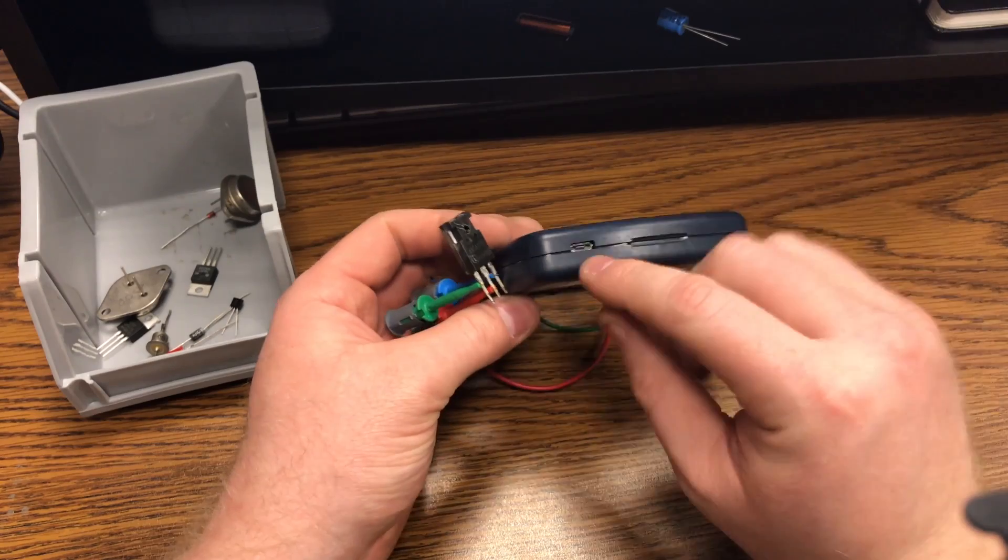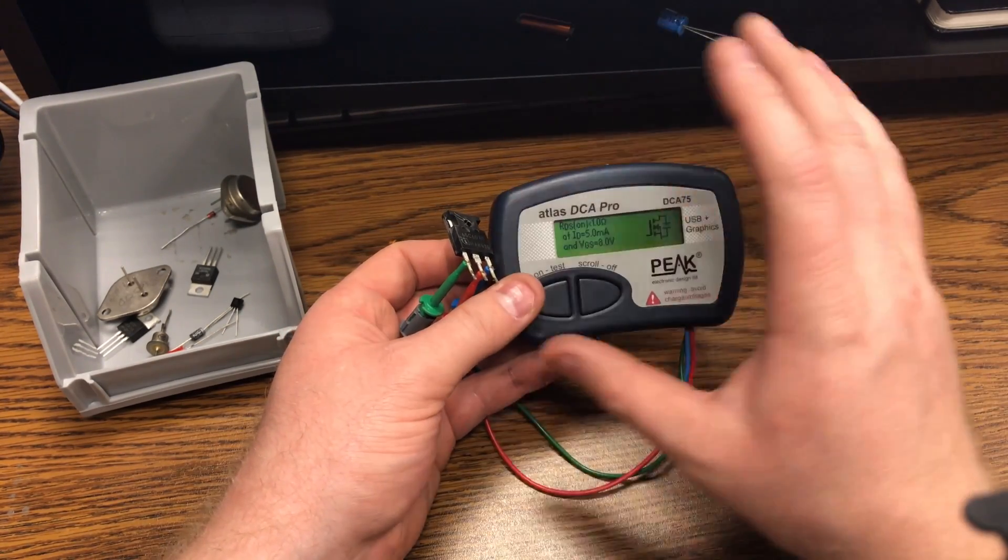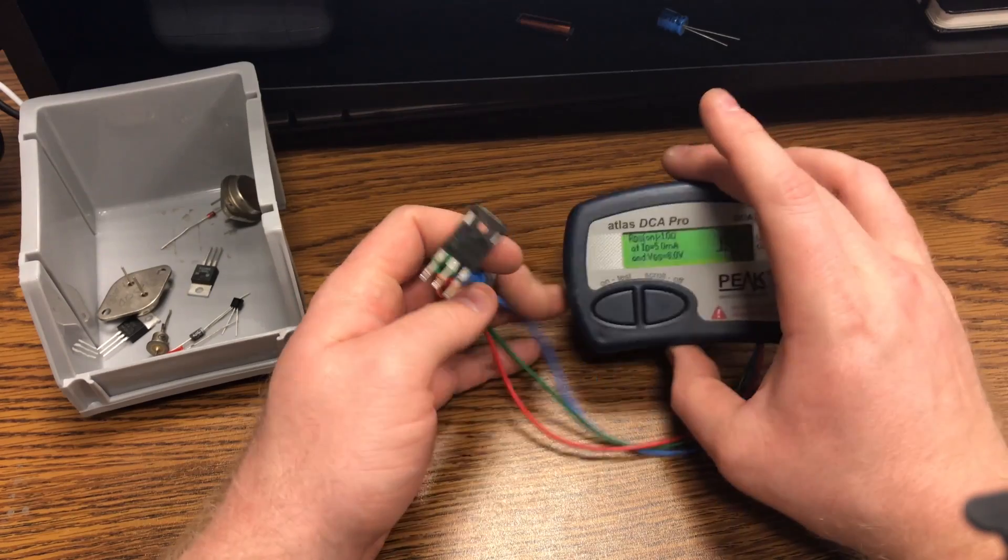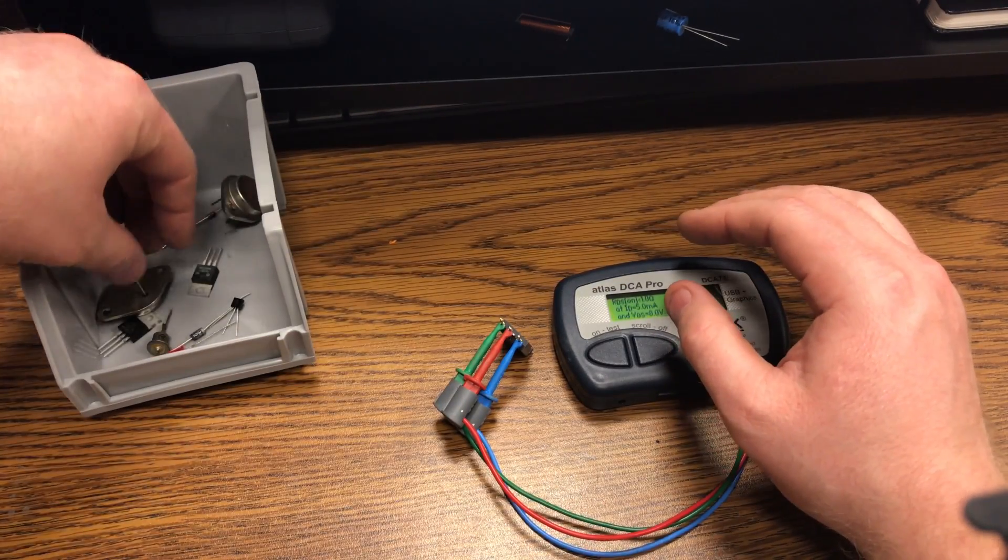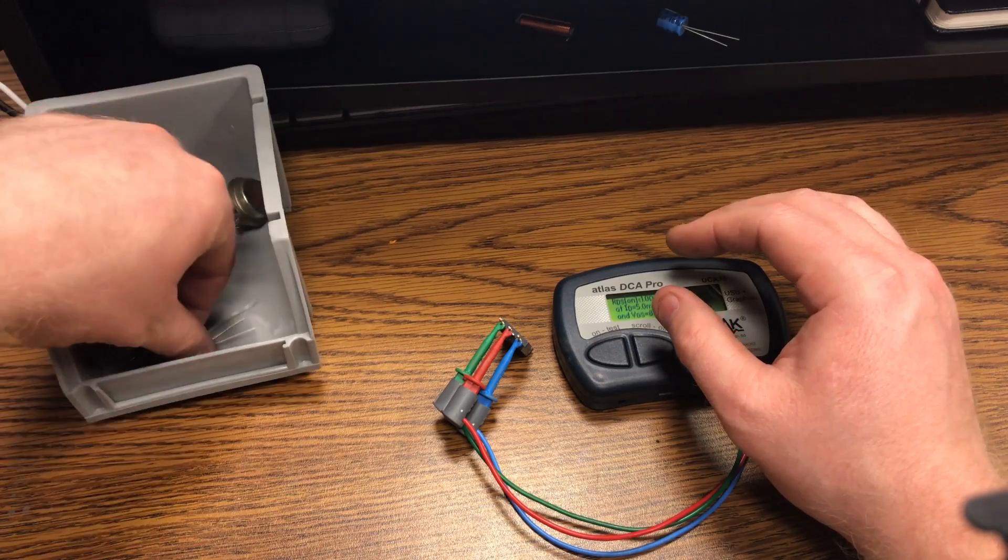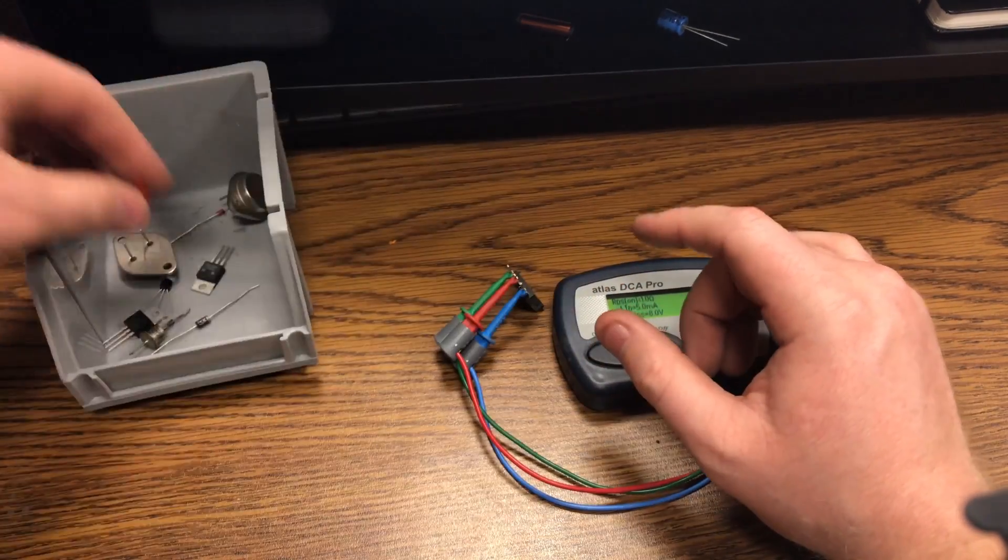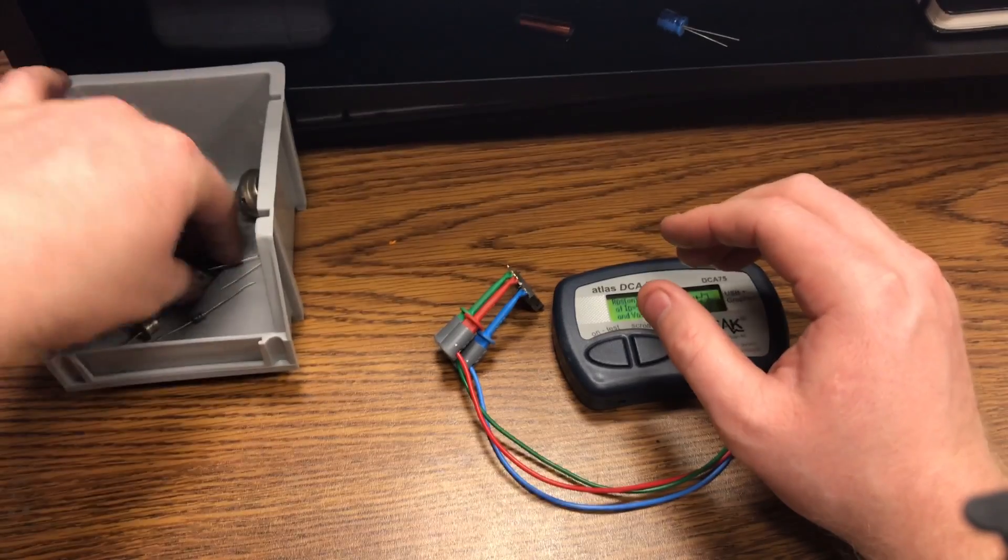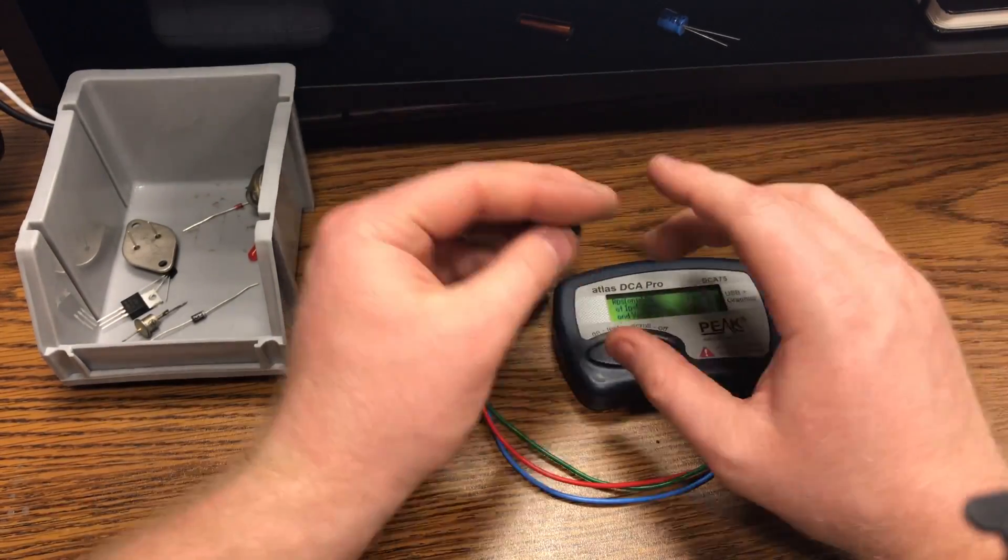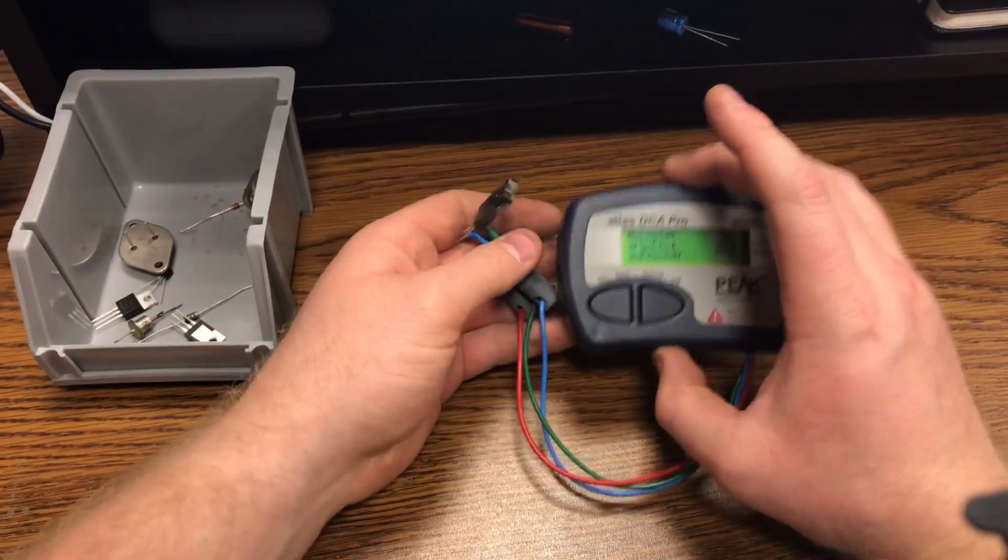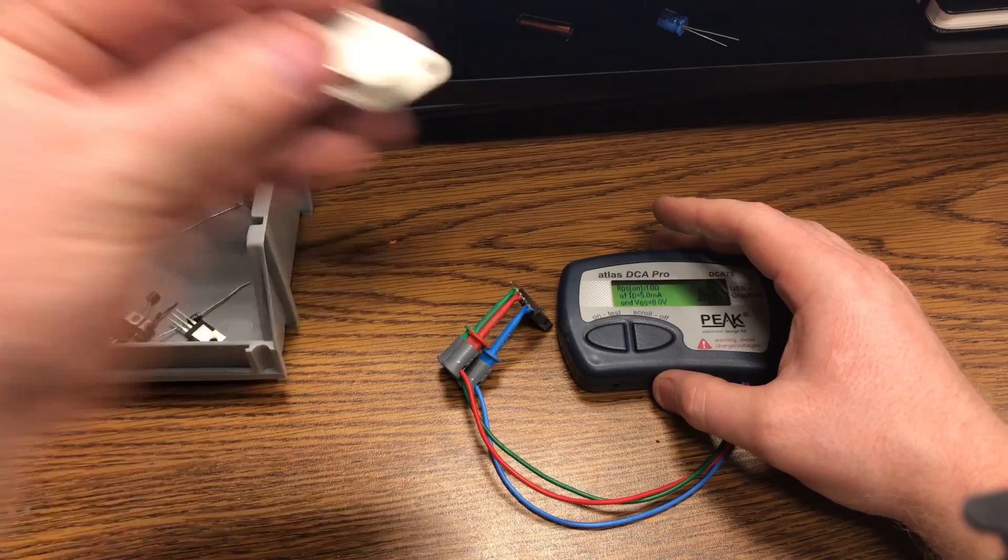If you want, you can hook this up to your computer with the USB connection and you can plot different graphs for the different parts, which is really cool. So you can do, for let's say an LED, you could do voltage versus current, or a voltage regulator, the voltage in versus the voltage out. It'll give you a nice little graph.